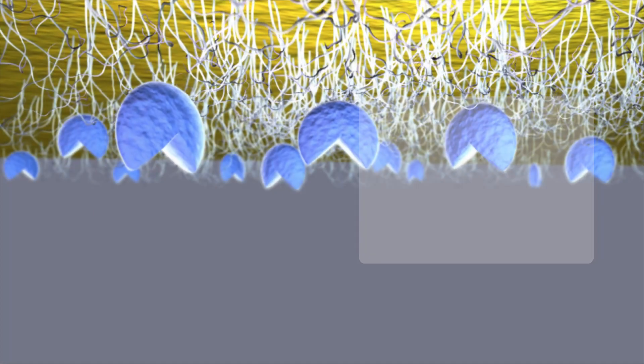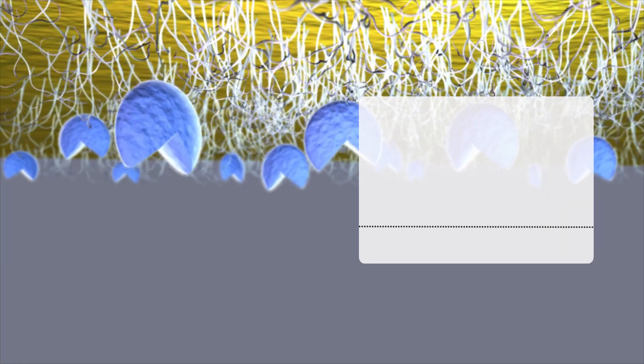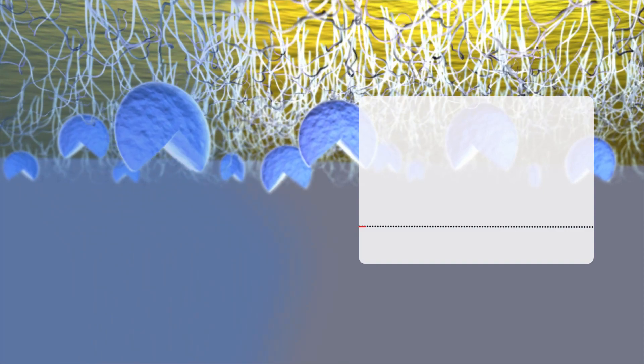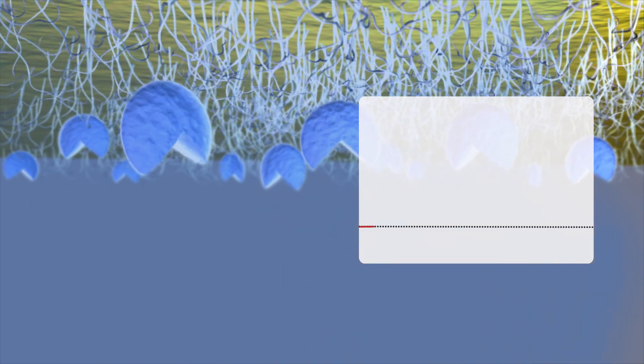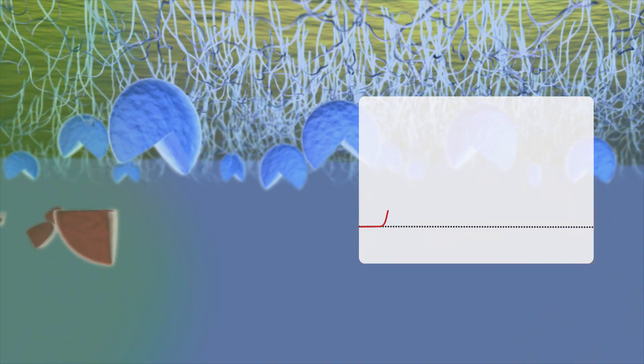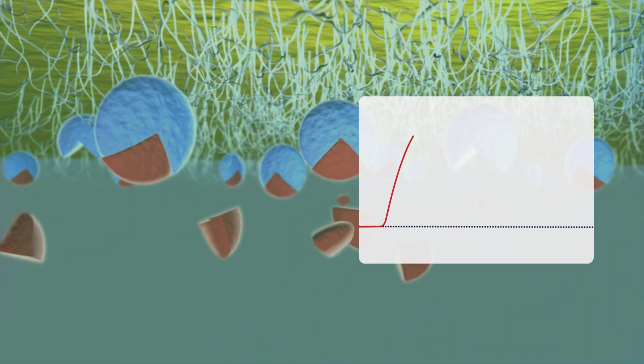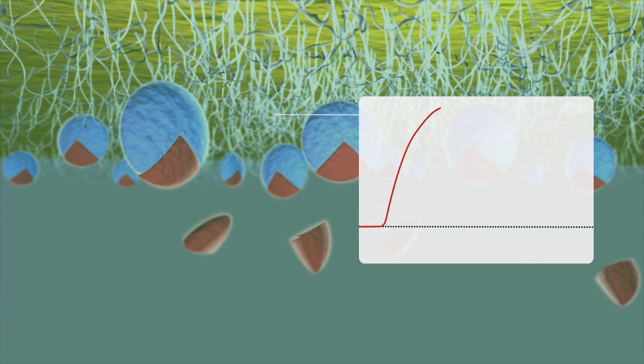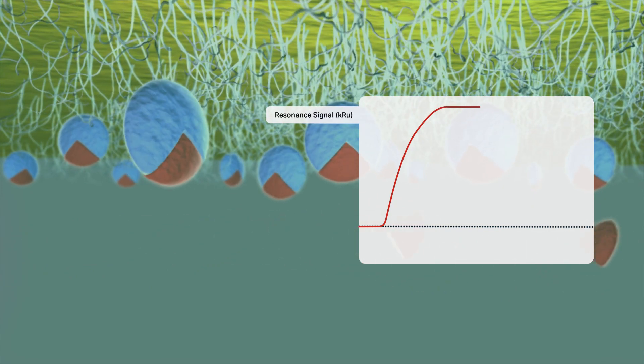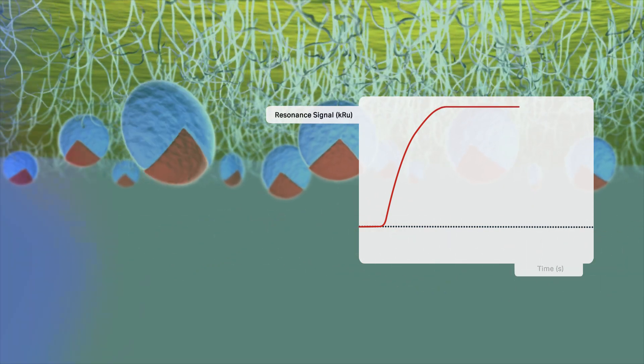The sensor surface, the microfluidic system, and the SPR detection unit work together to measure biomolecular interactions. The result from the detection of change in refractive index is displayed as a sensorgram, where the binding response on the y-axis is plotted against time on the x-axis.